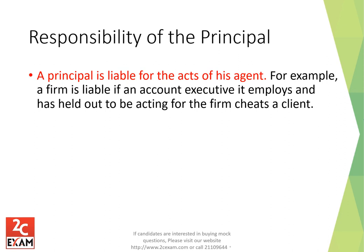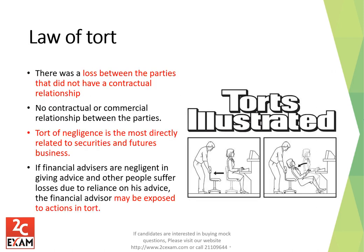Responsibility of the principal: a principal is liable for the acts of his agent. For example, a firm is liable if an account executive it employs and has held out to be acting for the firm cheats a client — the company is responsible for the client's damage, because the account executive is acting on behalf of the firm.